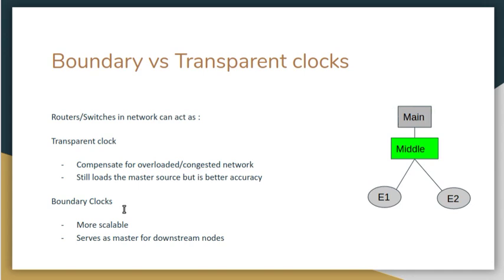Boundary clocks help address the scalability problem. When the main system talks to the middle system, the middle system terminates that information and generates the clock itself, then acts as a source of clock for E1 and E2. The middle box acts as a slave on the main side and a master on the other side, sending its clock to E1 and E2. This improves scalability because main is only talking to one middle box, and therefore can connect to many more middle boxes.